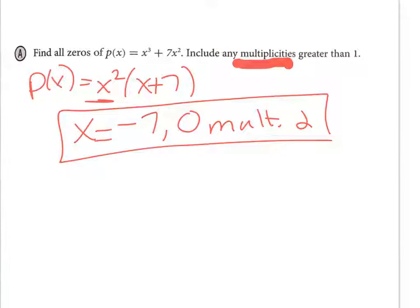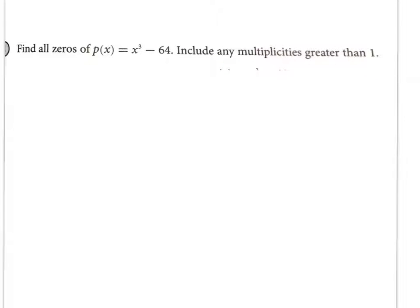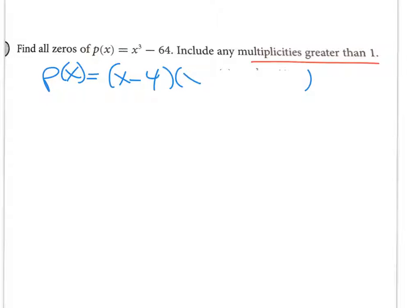Find all zeros including multiplicity again. This one we're going to factor — anytime you can factor, it's the way to go. These are cubes; we've factored cubes before. Small parentheses, big parentheses: take the cube root of each term, square the first, multiply them together and change the sign, square the second. One of my zeros right away is positive 4.